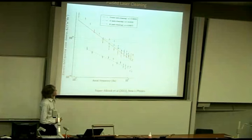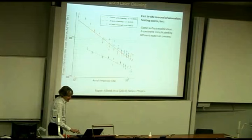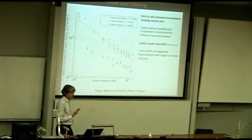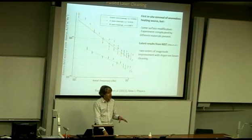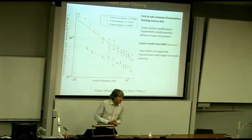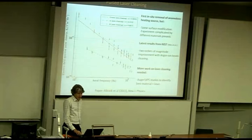About six months later, a group at NIST did an even more impressive cleaning experiment and saw a much bigger improvement — roughly a factor of 100 — using a completely different cleaning method called argon ion milling, where they let argon into the vacuum system and discharge in the argon. There's encouraging work in the last year or so on finally getting to grips with this so-called anomalous heating problem.